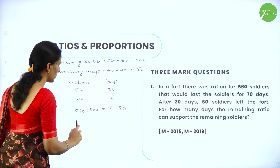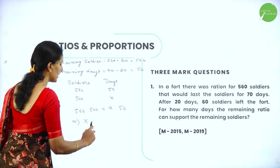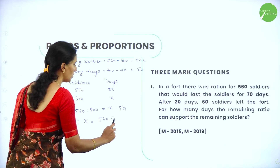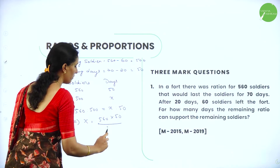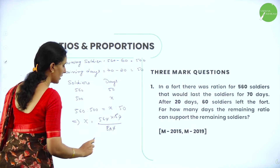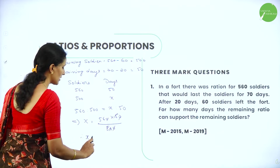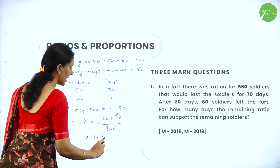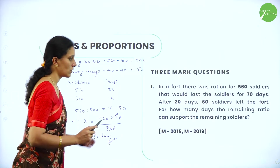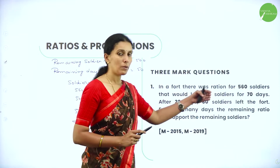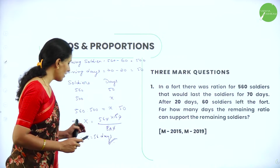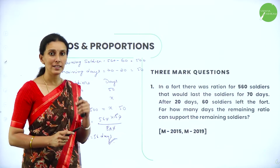So: 560 is to 500 equals x is to 50. Therefore x equals 560 into 50 divided by 500. Cancelling zeros and fives, x equals 56 days. So this represents the number of days. Therefore the remaining ration can support the soldiers for 56 days — that is an extra 6 days it can support the remaining soldiers.